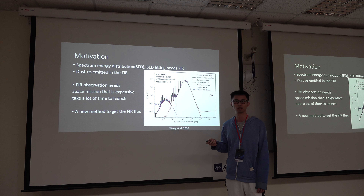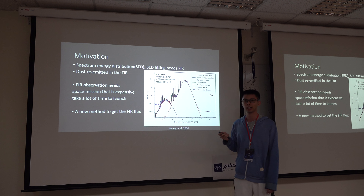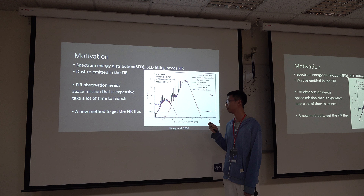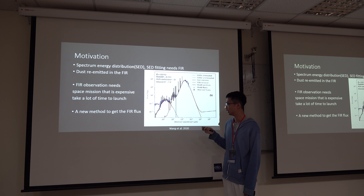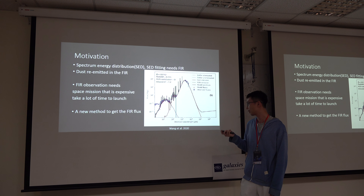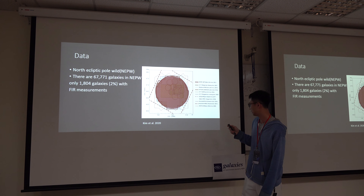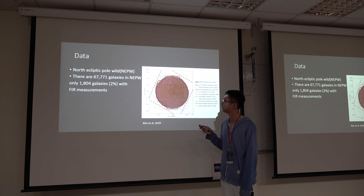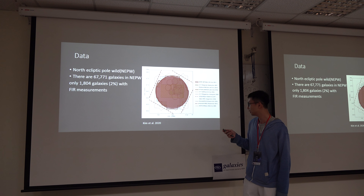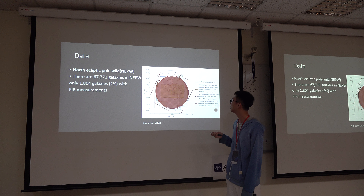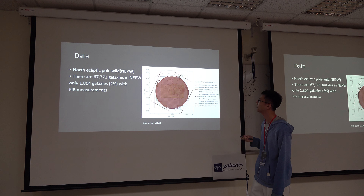Far-infrared is hard to detect on the ground, and we must use a telescope to detect the far-infrared in outer space. Space missions take a long time and are expensive. So we want to use machine learning to get the far-infrared flux.